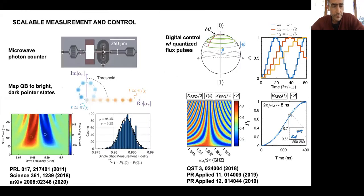There are a few different sub-projects within my group. One is focused on developing high-fidelity, fast, scalable quantum measurement. It turns out that this is the key ingredient in quantum error correction. We've developed an approach that's based on microwave photon counting.